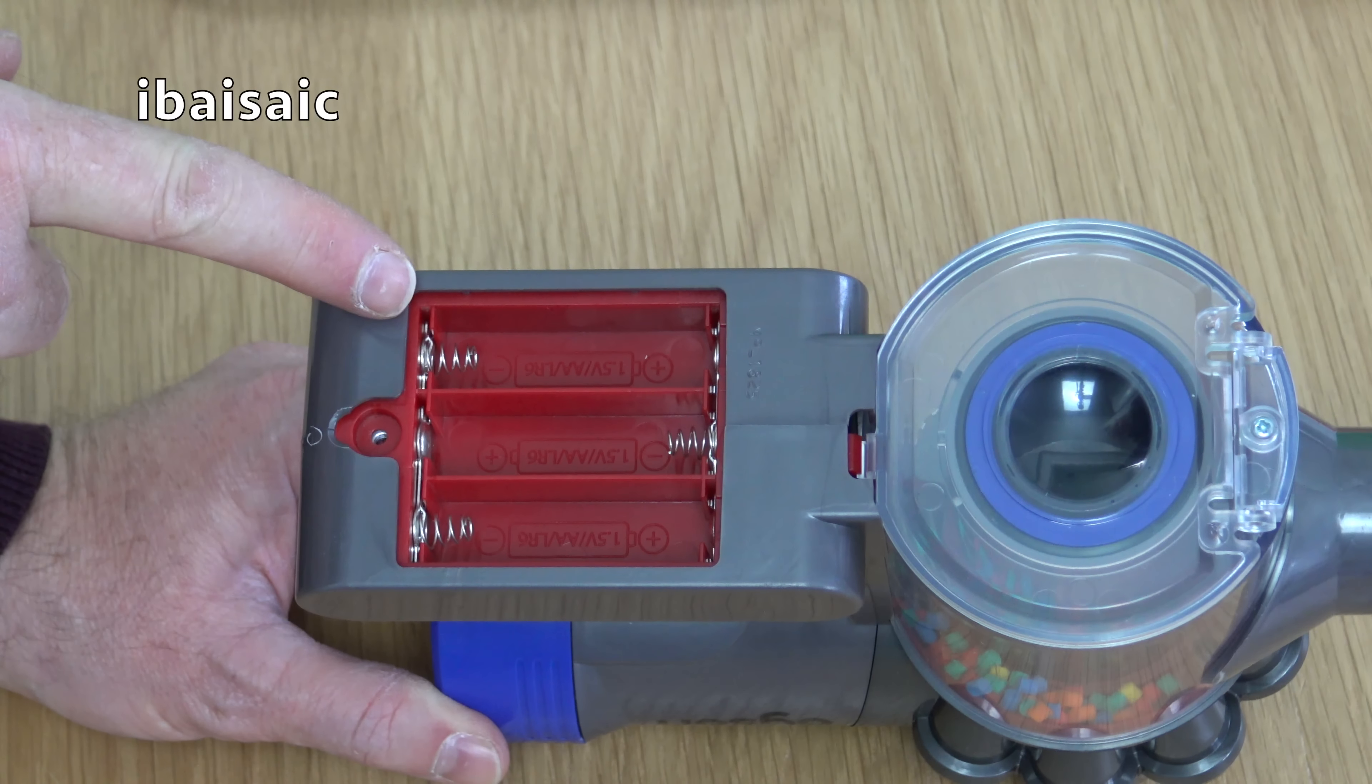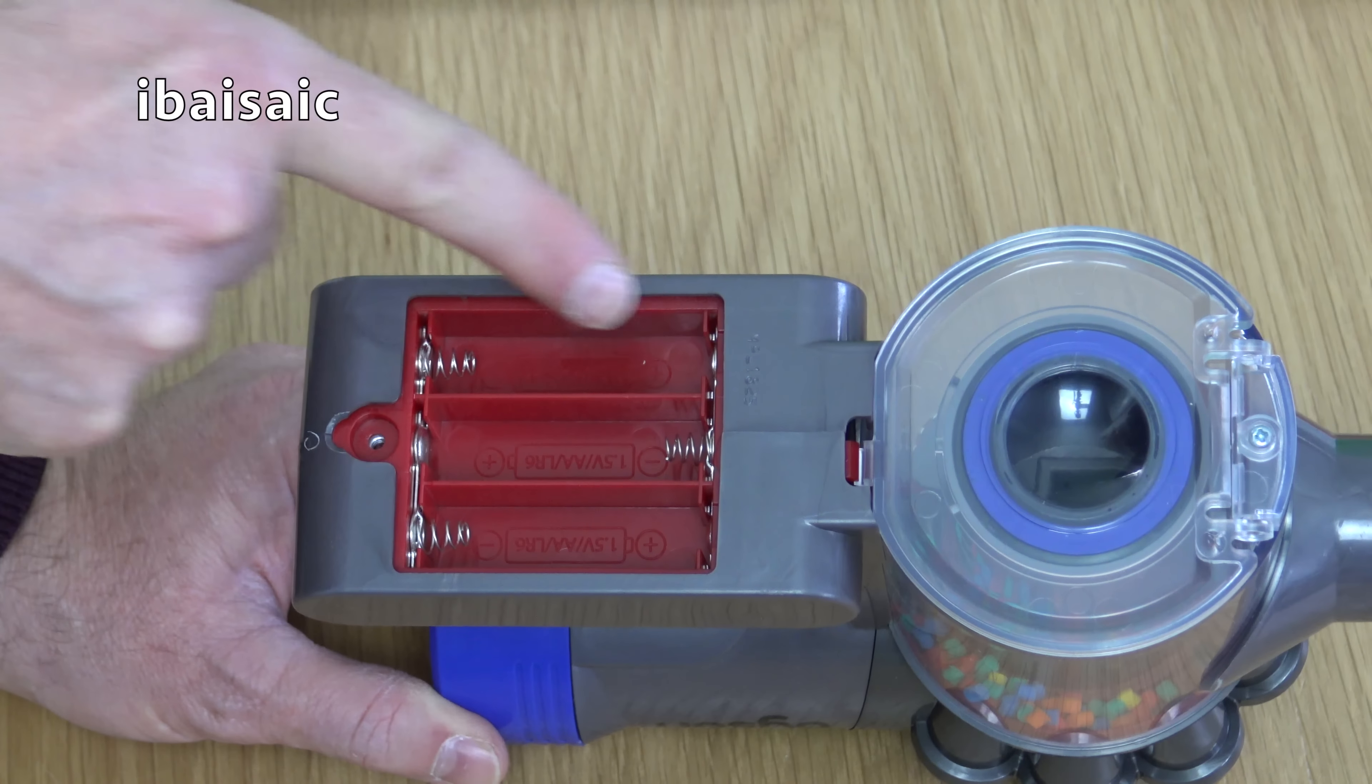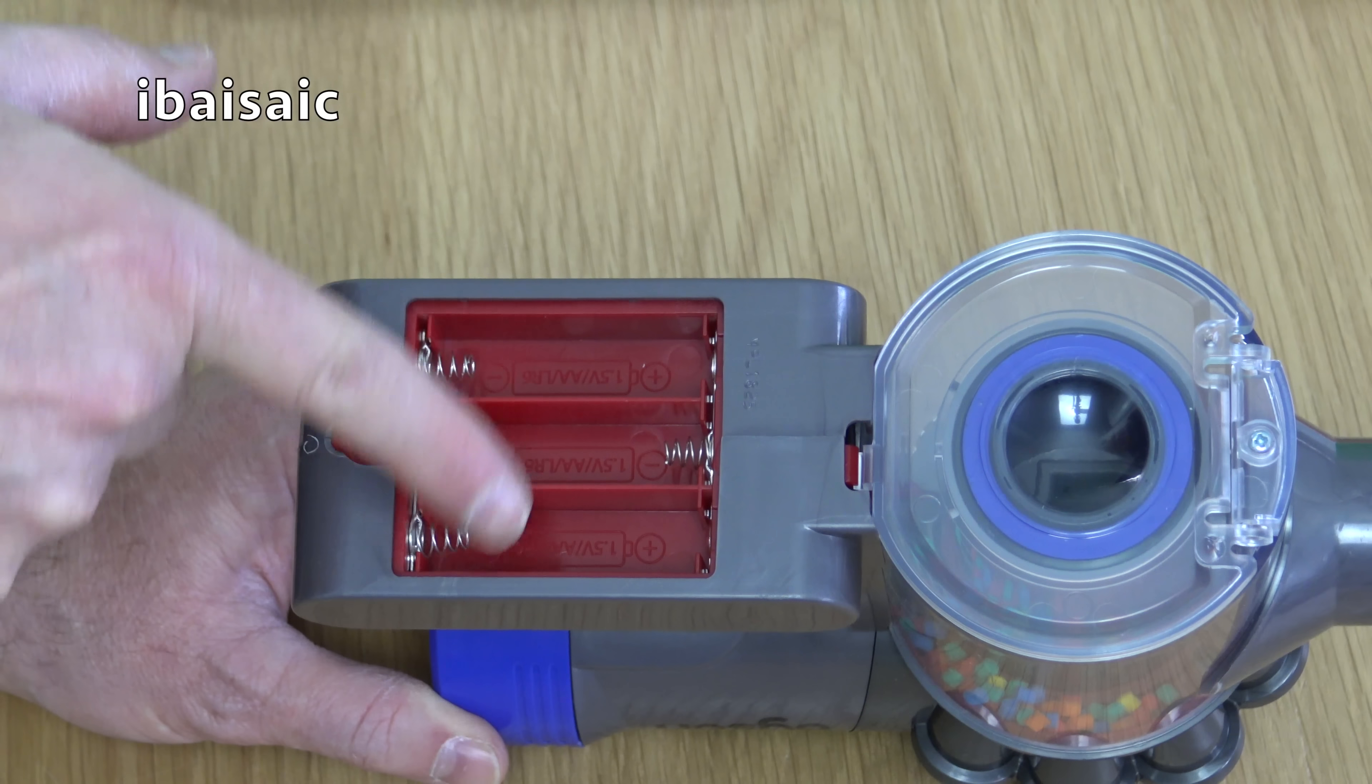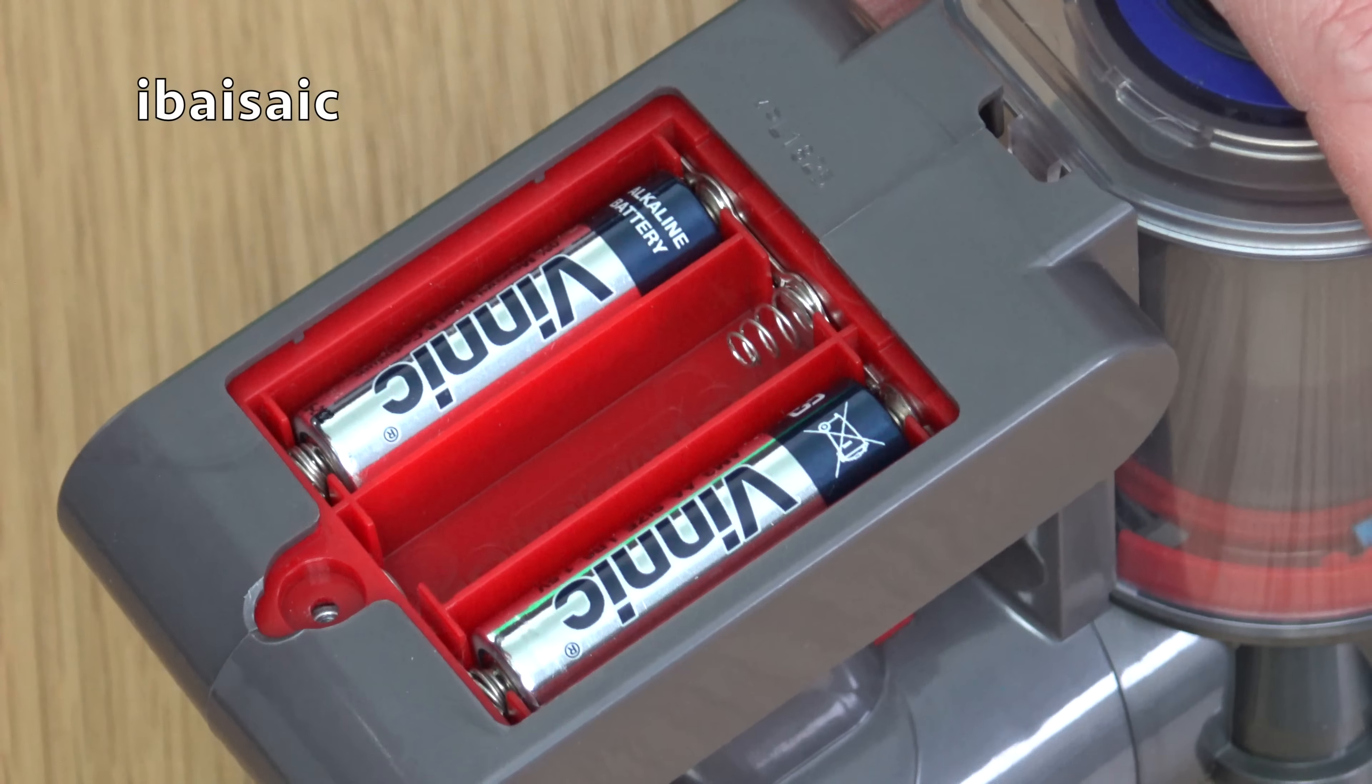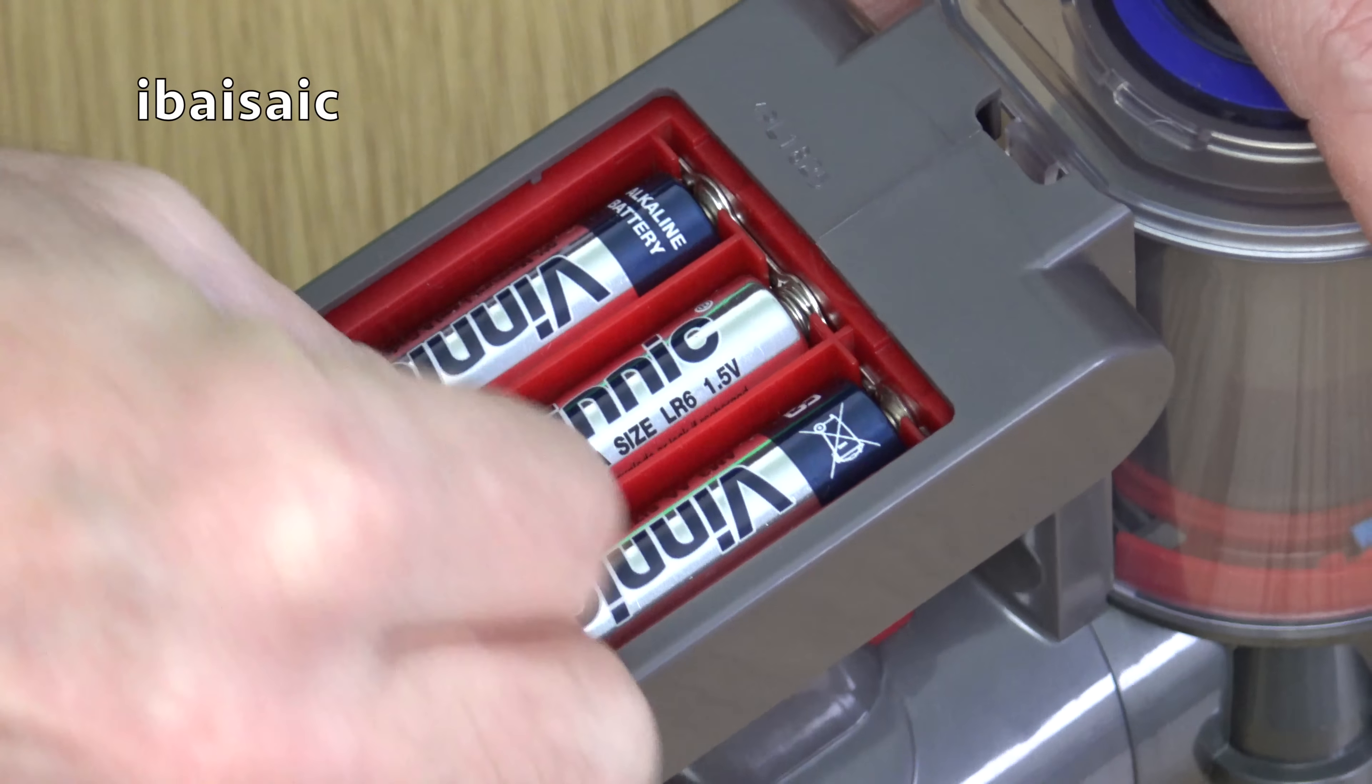Three double A batteries and we've got to observe the polarity. Make sure they go in the right way, otherwise this toy Dyson won't work. That's two batteries in. So just one more to go.